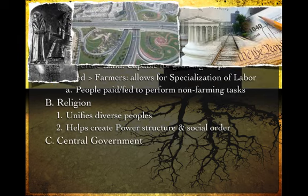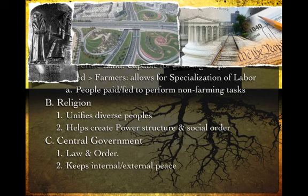This flows nicely into central government — the centralized power, putting all rule and authority in the hands of a few select people. This allows them to provide law and order, to create the rules that help govern these diverse groups of people to keep them from killing each other, to prevent utter chaos, and to help them work together. This also helps to keep internal and external peace. If people are becoming unruly, the central government can help correct them. If a neighbor is getting hostile or wanting to take your fertile land, the government's job is to provide protection or negotiate peace.